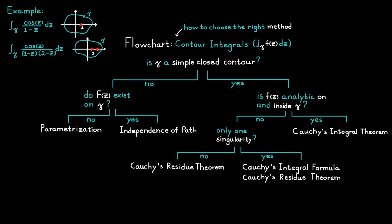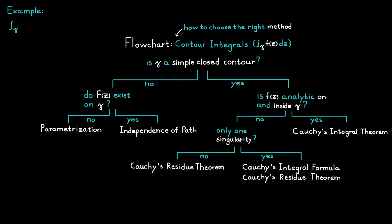If we instead had two singularities, as is the case in our next example, the start is the same as last time — we are still dealing with a simple closed contour and the function is not analytic on and inside the contour because of the singularities. Since we have two of them, we are going to have to use Cauchy's residue theorem.